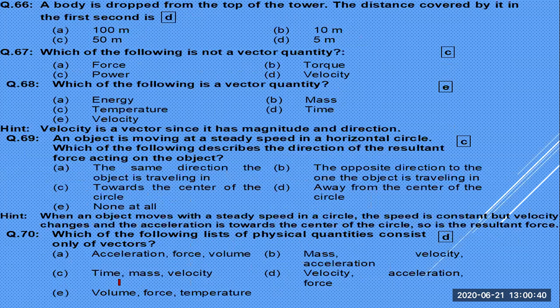A body dropped from the top of a tower — to find the distance covered in the first second, the initial velocity is zero. Put values into the equation of motion S = Vit + ½at² to find the answer. Also, power is a scalar quantity — not a vector.